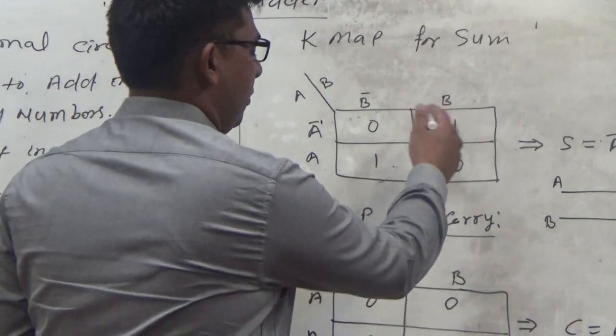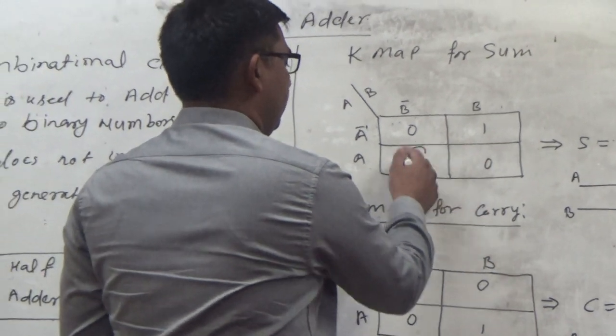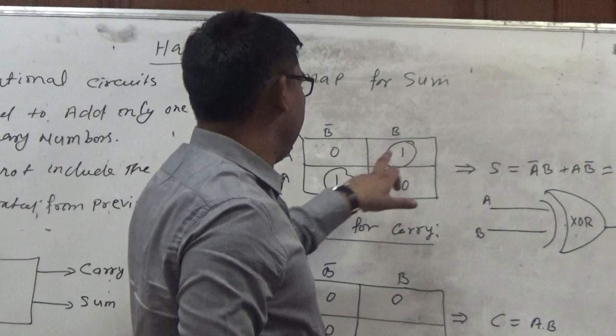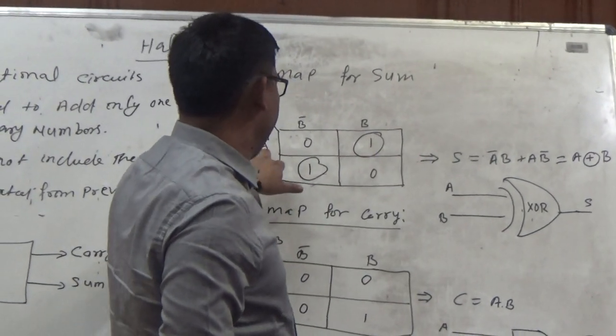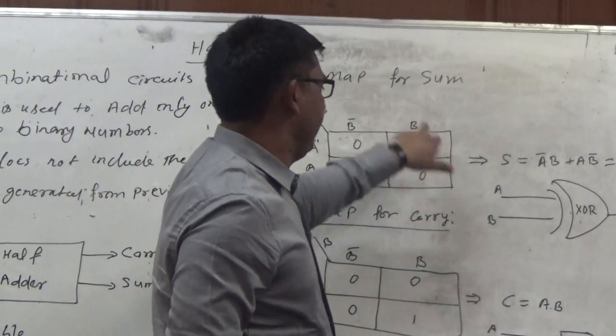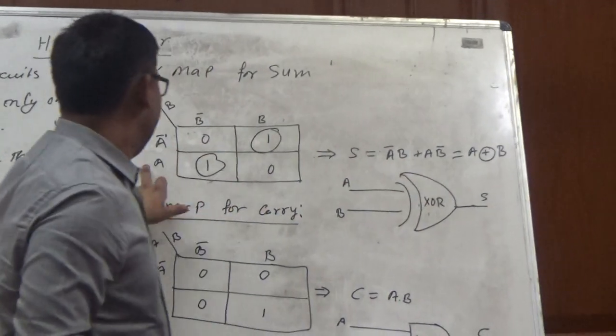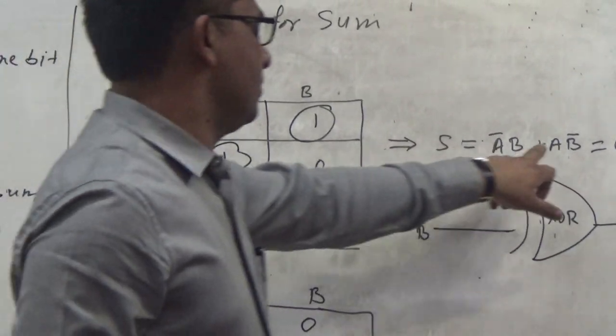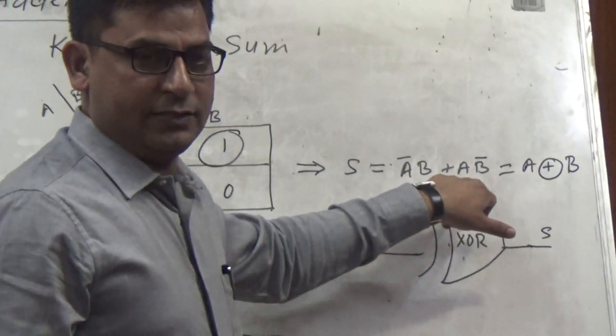There is no possibility to make a group, so we have to go with the individual cells. The Boolean expression for this cell is A bar B, and the second one is for this cell, A B bar, because we are going with sum of products.